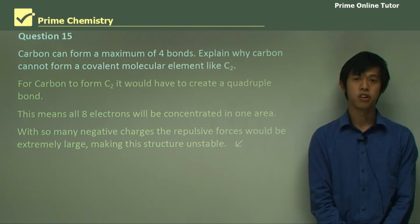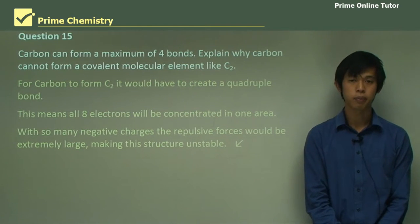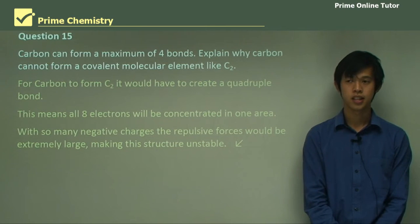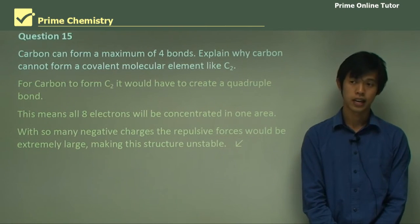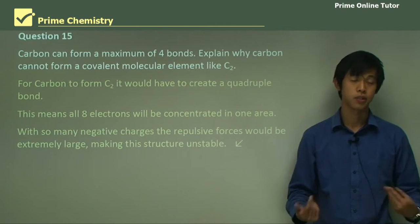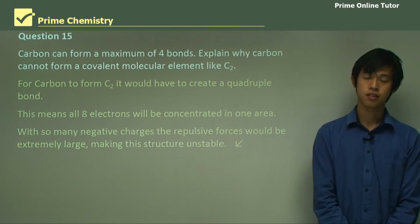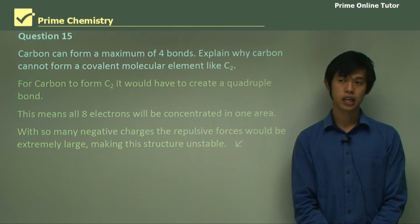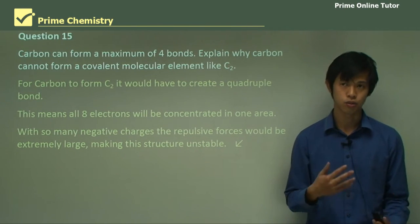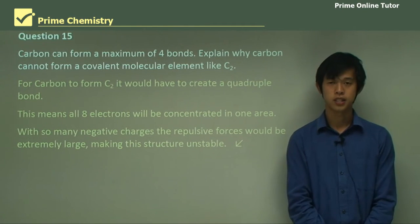So that concludes today's lesson on common covalent substances. We looked at covalent molecular substances and also covalent network substances. And we saw examples of each and how they differ and also what are some common examples that we see every day. So hopefully you've learned something. And in the next lesson, we'll be looking at using properties to identify different bonding types. So we look forward to seeing you at our next lesson.